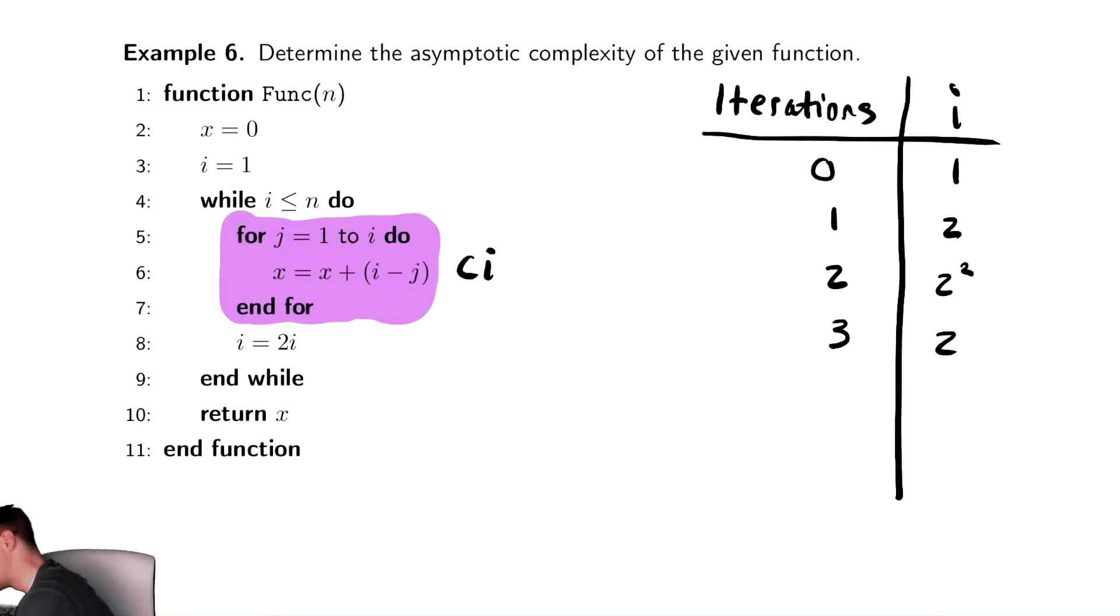So after k iterations, it's looking a heck of a lot like 2 to the k.